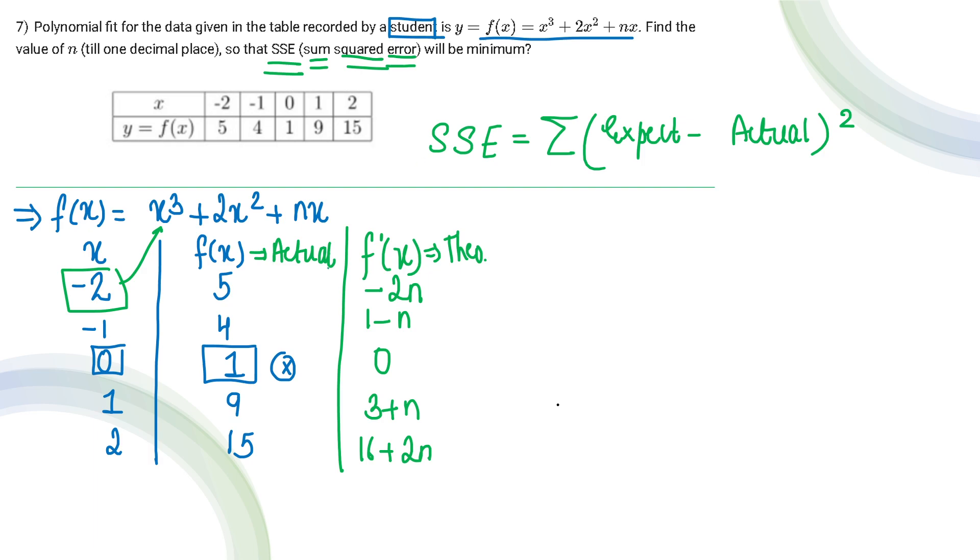Now let's calculate SSE. SSE is expected minus actual squared. So: (-2n - 5)². Similarly, (1-n - 4)². Then (0 - 1)². Then (3+n - 9)². And (16+2n - 15)². I've written the value for each term, but I have to do the summation of all these terms.